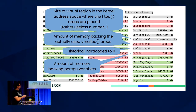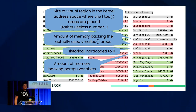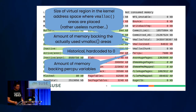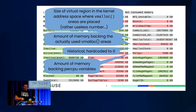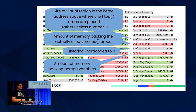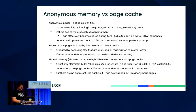PercpuAlloc is useful because the kernel uses a lot of per-CPU variables which have to be stored somewhere. We can know how much memory is used by that and whether somebody is leaking this kind of memory.